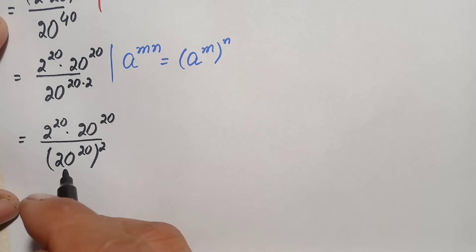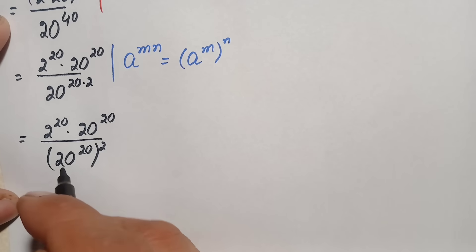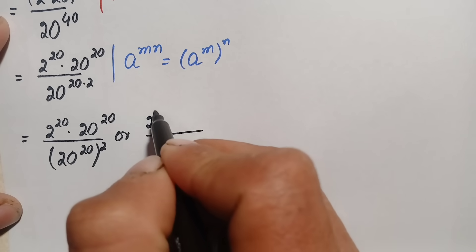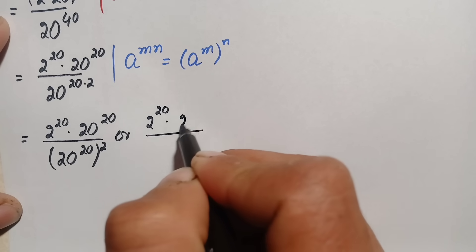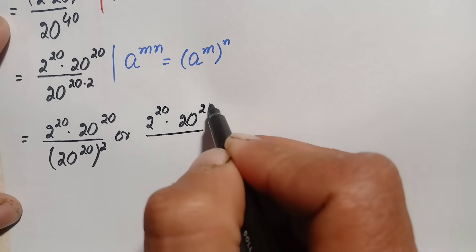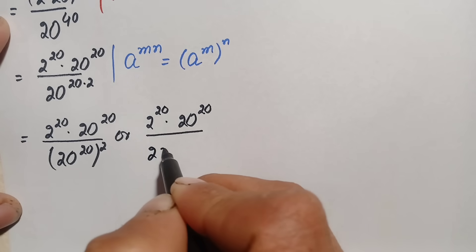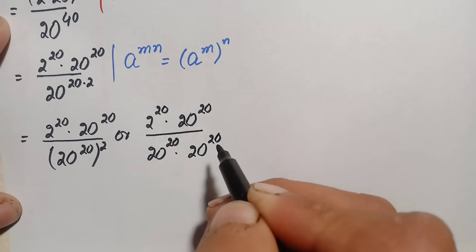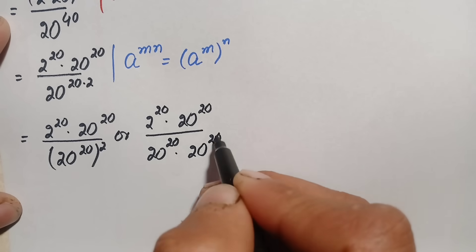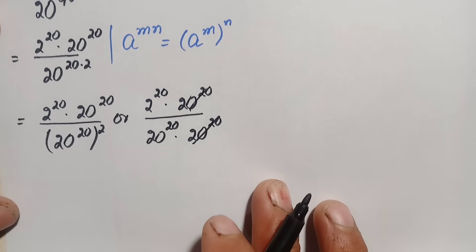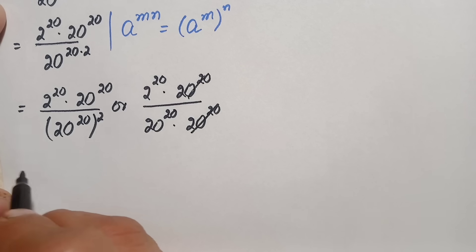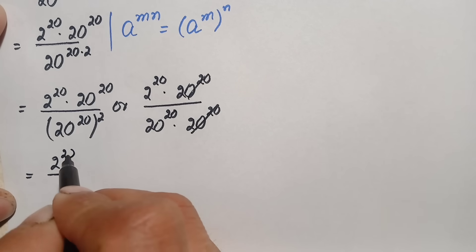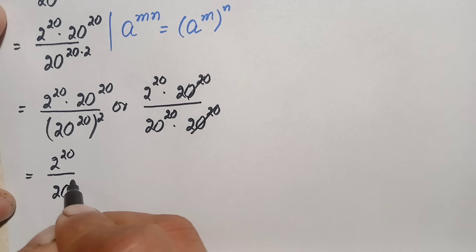Since the denominator is in square form, we can write it as two factors: 20 raised to power 20 times 20 raised to power 20. We then cancel the common 20 raised to power 20 in the numerator and denominator, leaving 2 raised to power 20 divided by 20 raised to power 20.